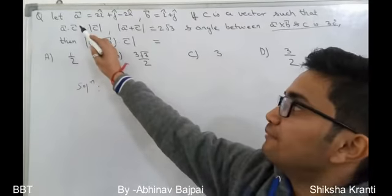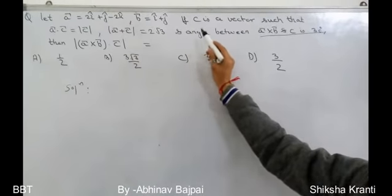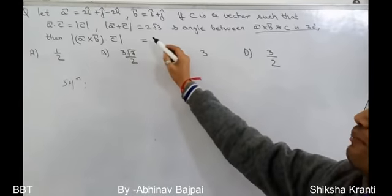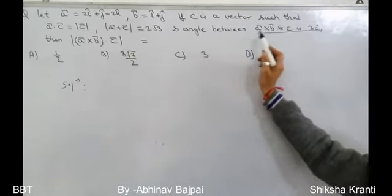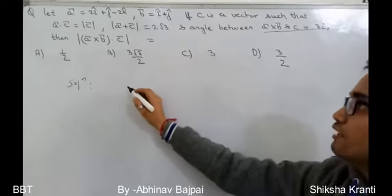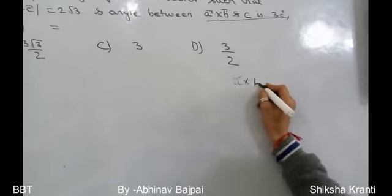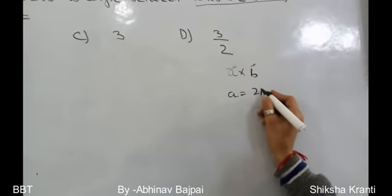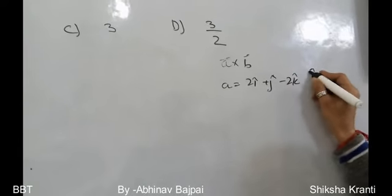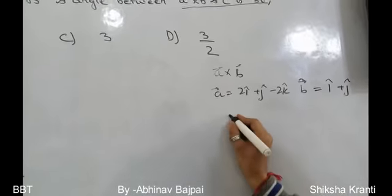This problem is from the vectors chapter. Let vector a = 2i + j - 2k, vector b = i + j. Vector c satisfies: a·c = |c|, |a + c| = 2√3, and the angle between a×b and c is 30°. We need to find |(a×b)·c|.